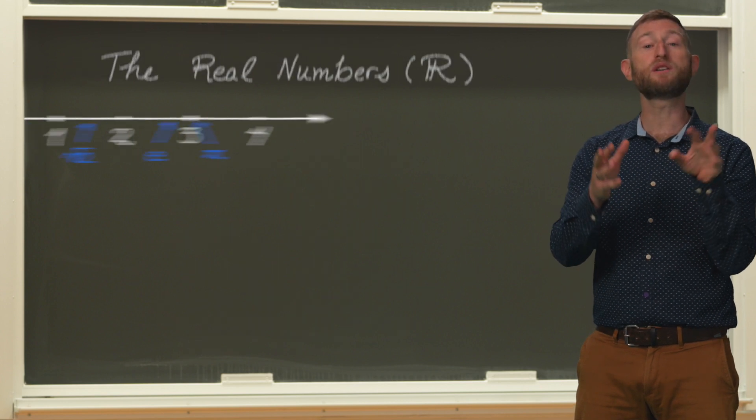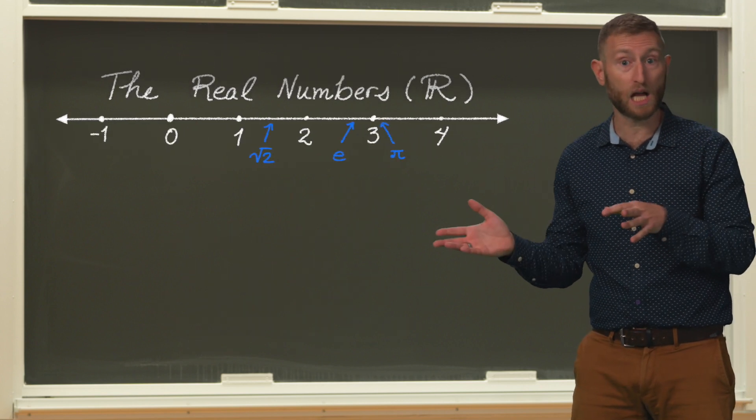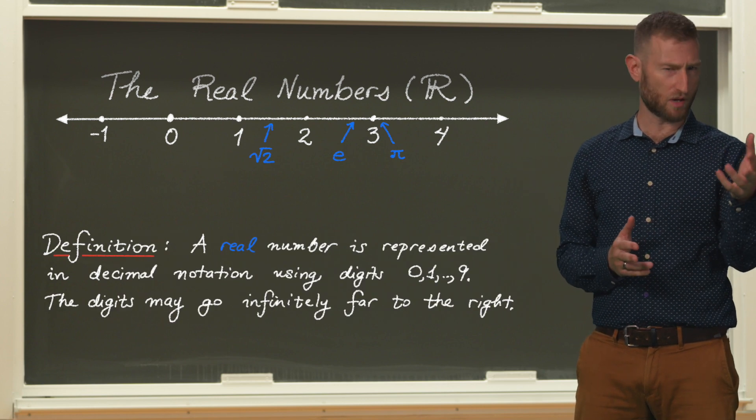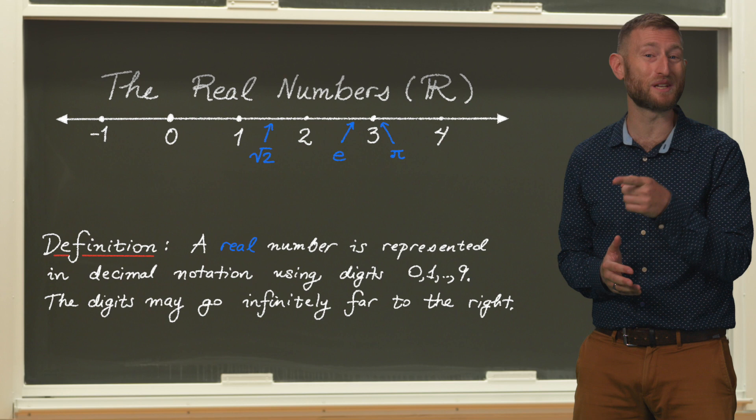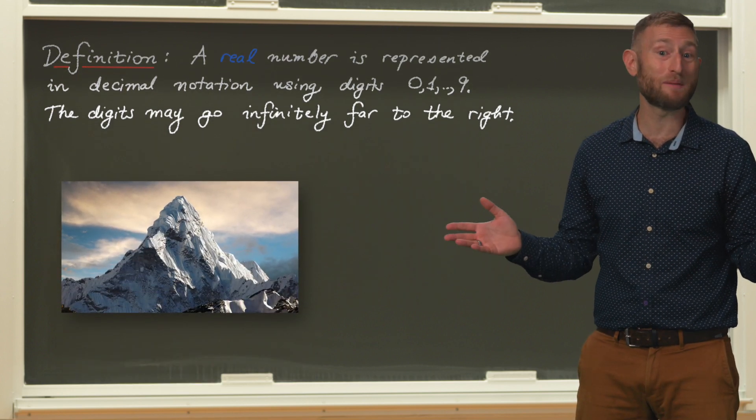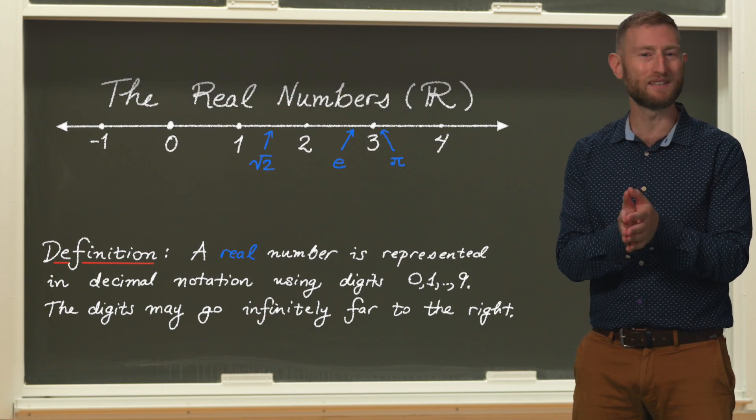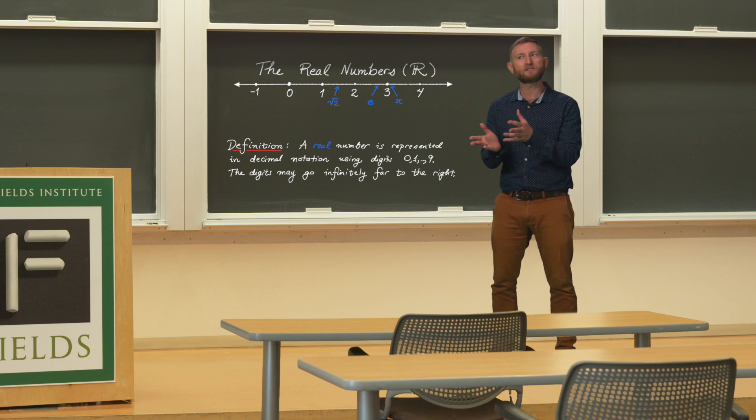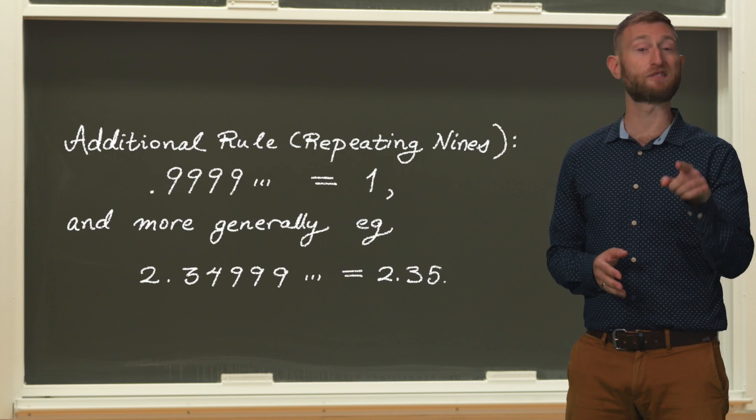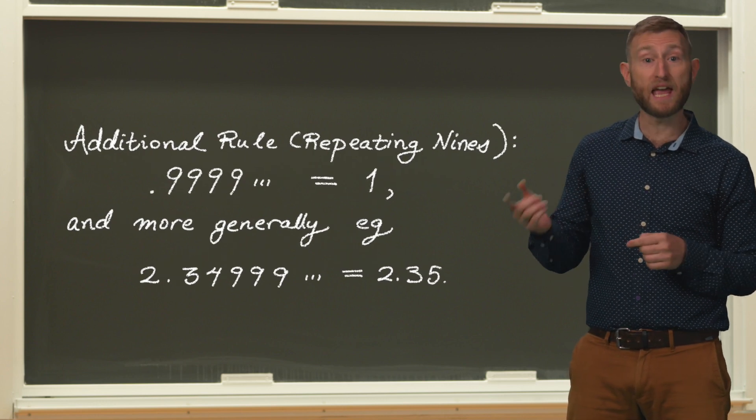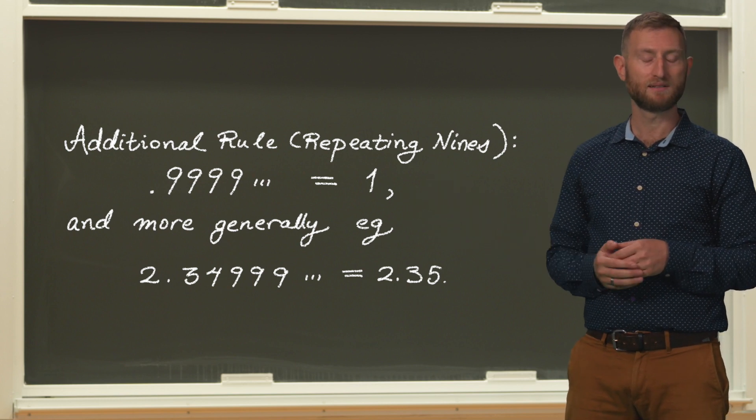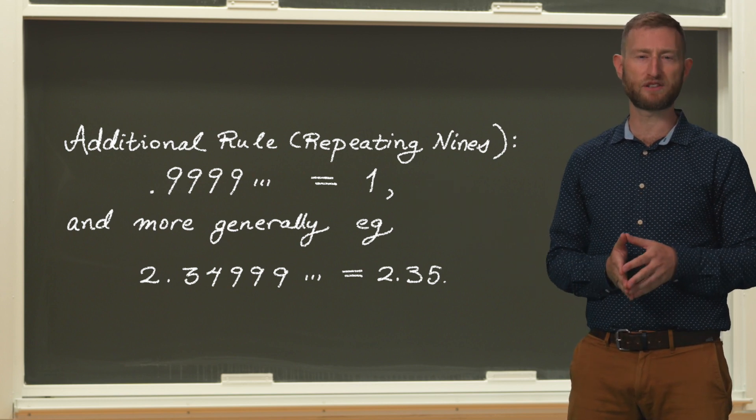The numbers you can write down with decimals, infinite or not, are called real numbers, so-called because they can represent quantities in the real world. How many kilograms is Mount Everest? Or how many meters from here to the moon? The answers are real numbers. So we have here a decent definition, the rules of the game, for real numbers. Actually, there's one more rule we mustn't forget. Point nine repeating equals one. And more generally, a tail of repeating nines can be rounded up.